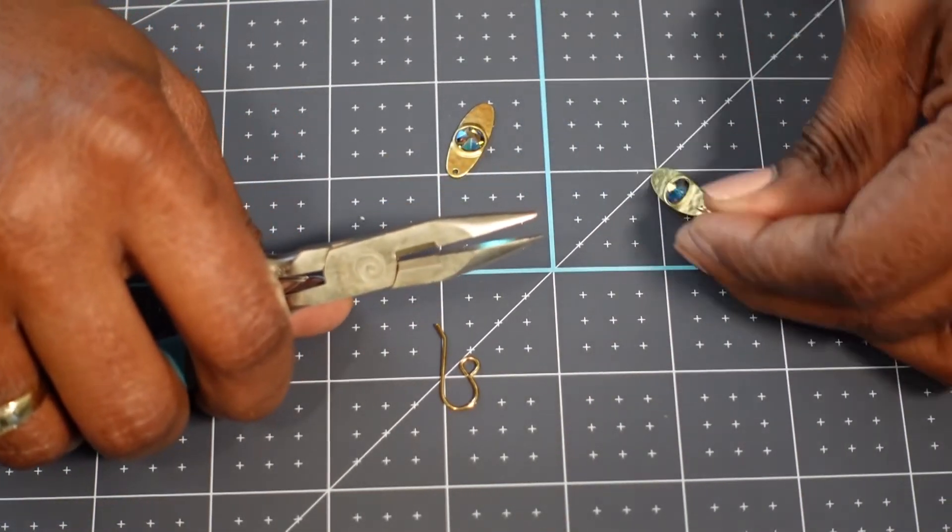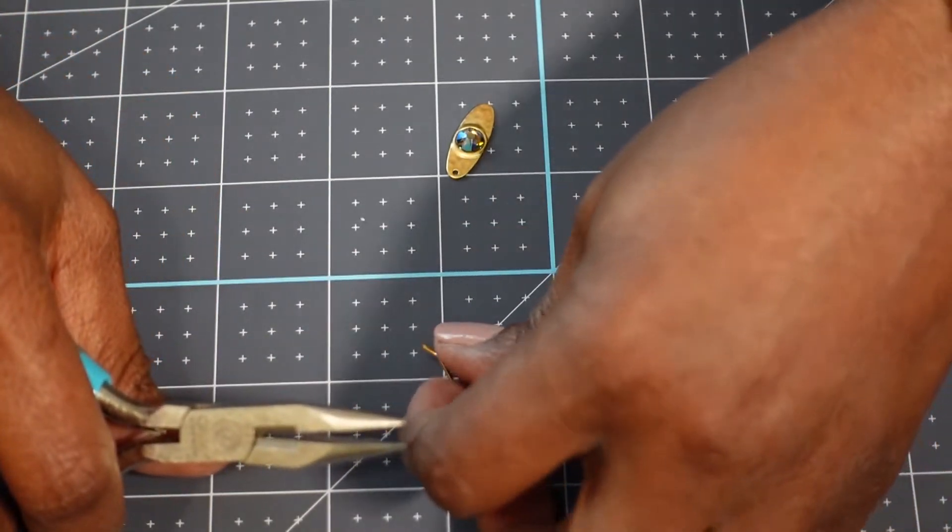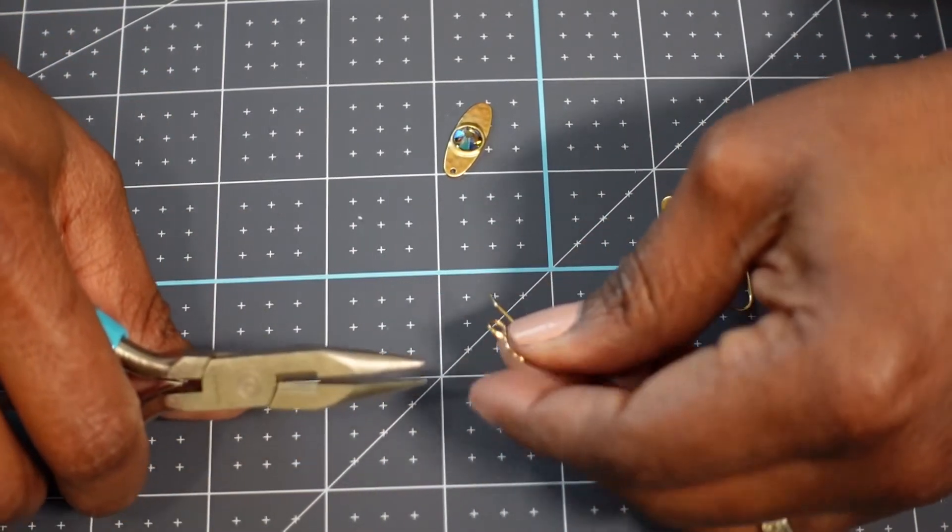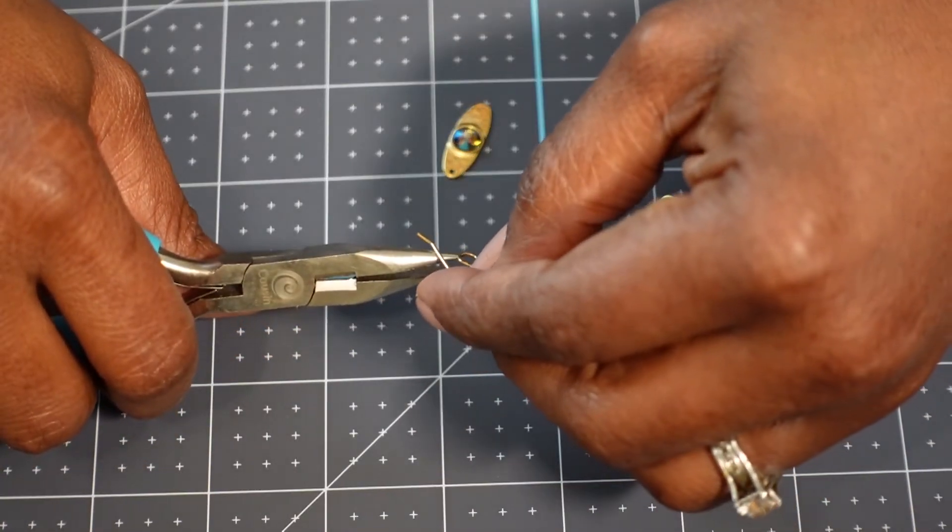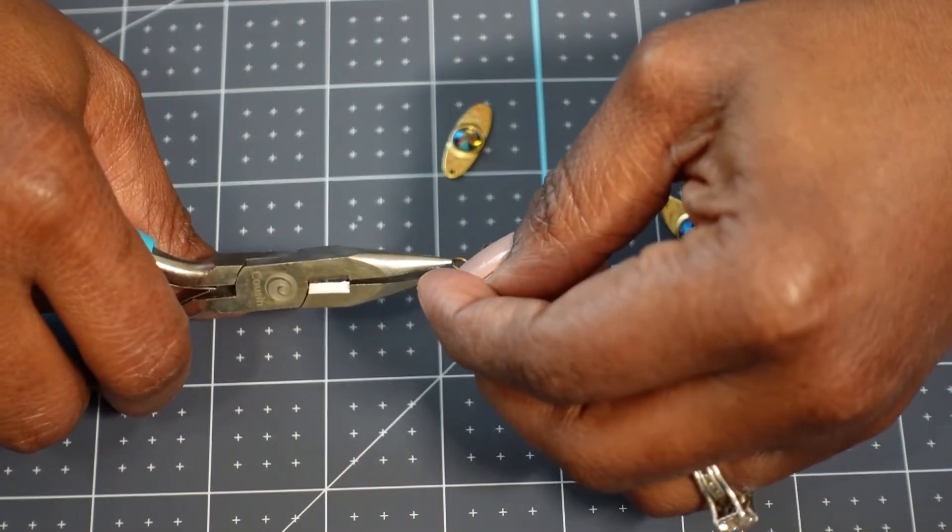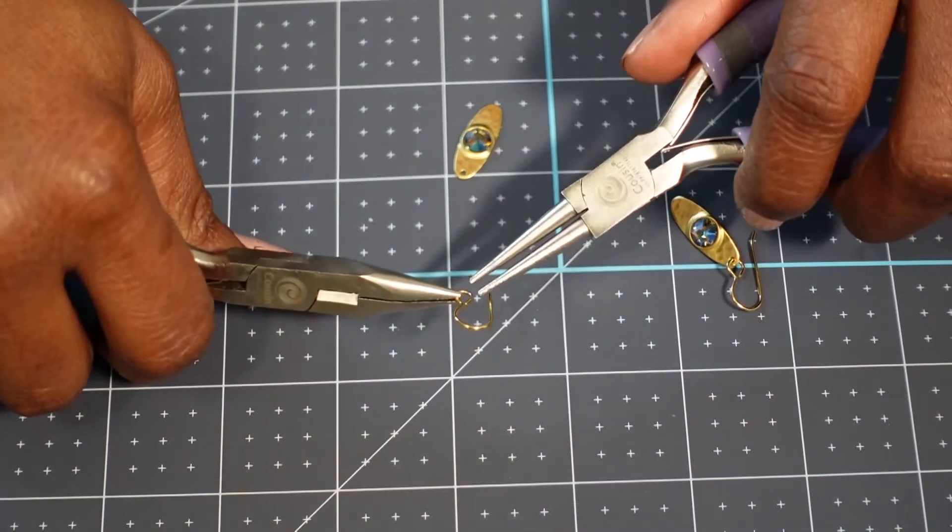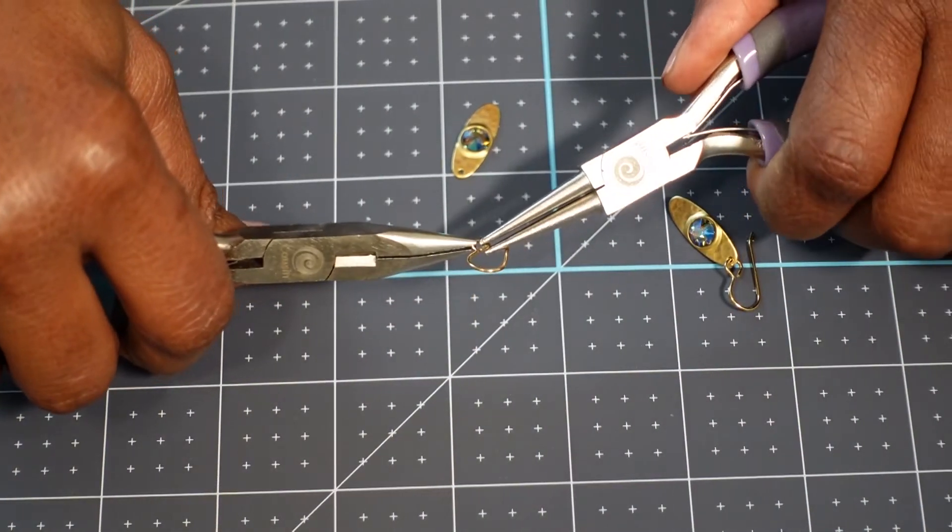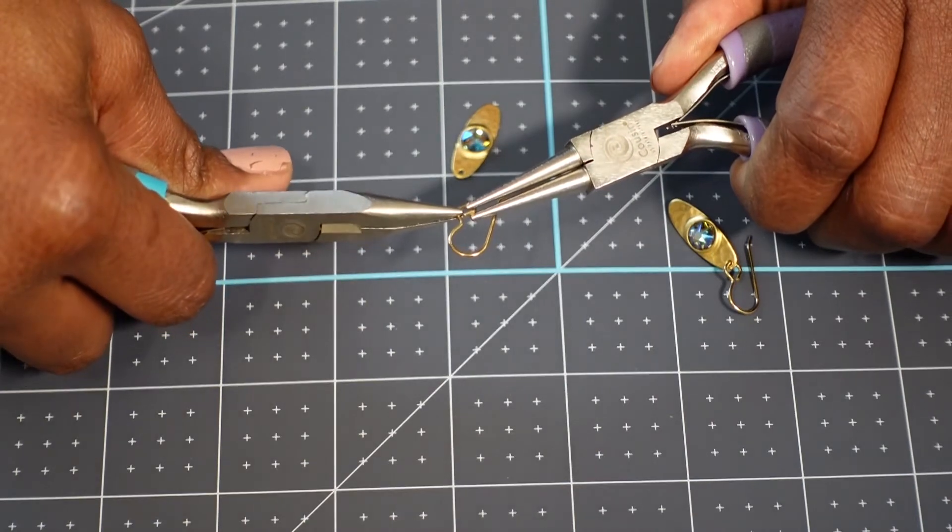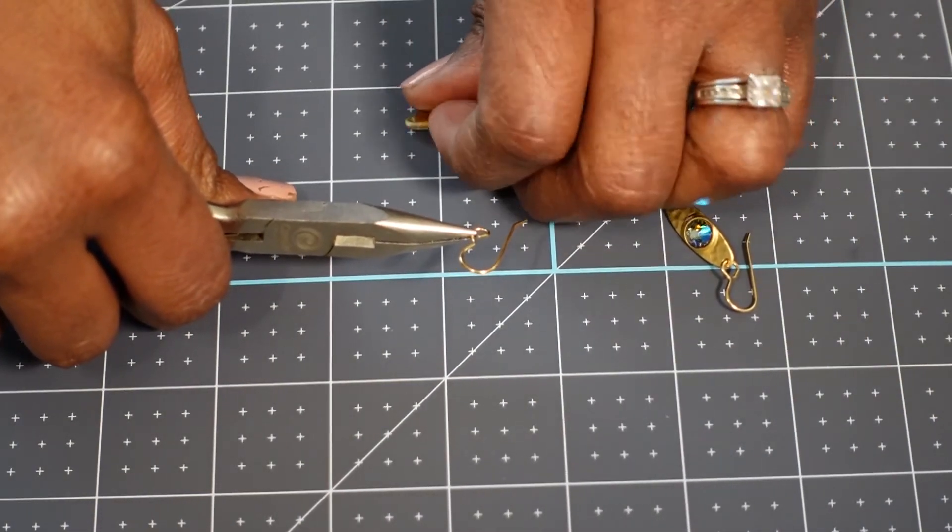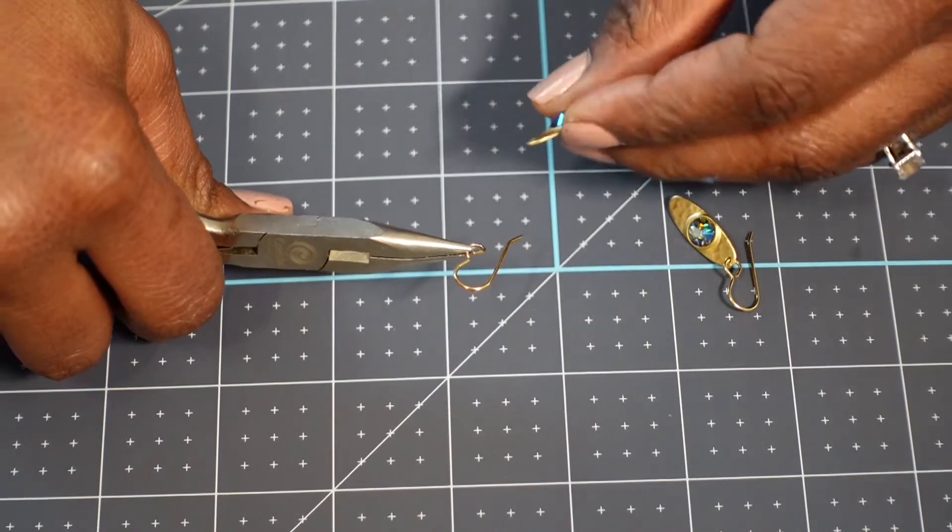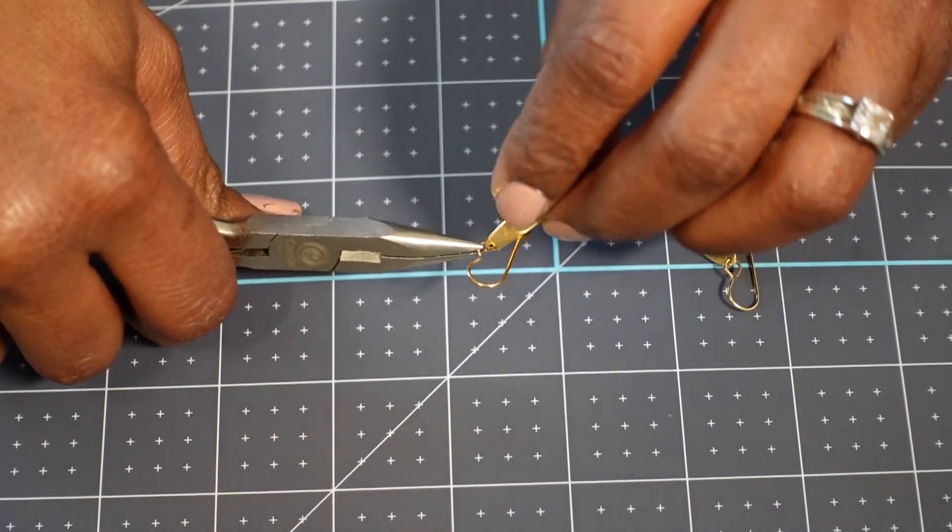And so that's the first earring. And I'm going to do the exact same thing with the other. I'm going to hold the earring with the flat nose pliers. And I'm going to take the round nose pliers. And I'm just going to twist just a tiny bit just to get it open enough to slide the pendant on through the hole that's provided.